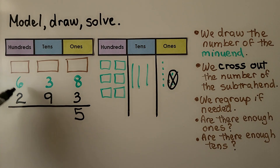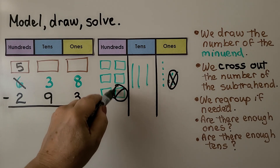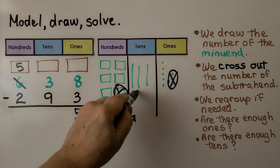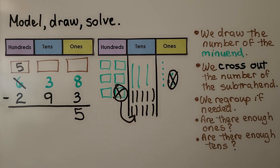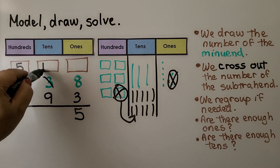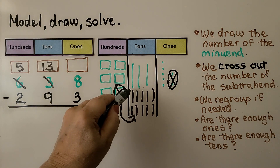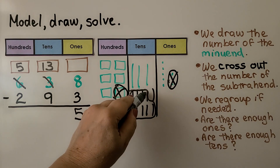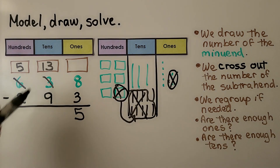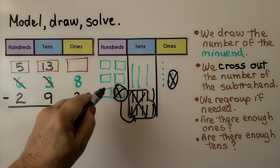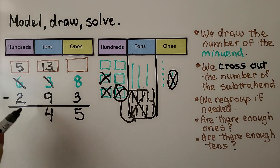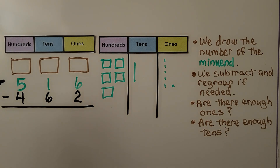So we go to the hundreds place and change 600 into 500. We move that hundred to the tens place as ten tens, so instead of three tens we now have 13 tens. We take nine away, which leaves four tens. 13 tens minus nine tens leaves four tens. Now we need to take away two hundreds — we can take away two, and that leaves three hundreds. 500 minus 200 is 300. Our difference is 345.